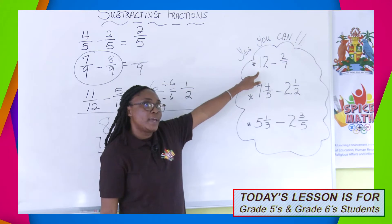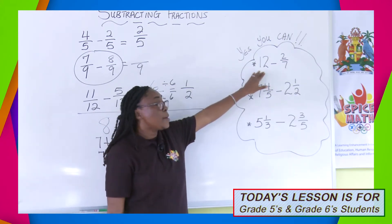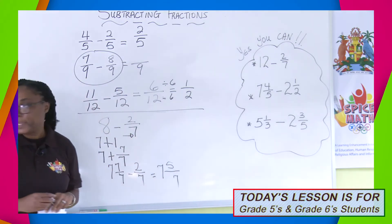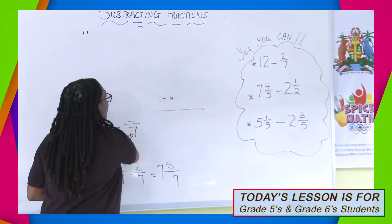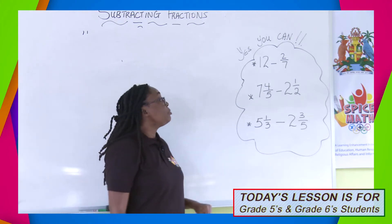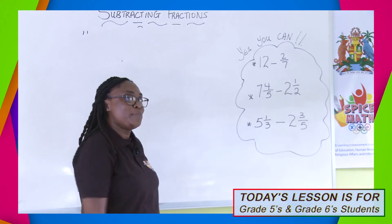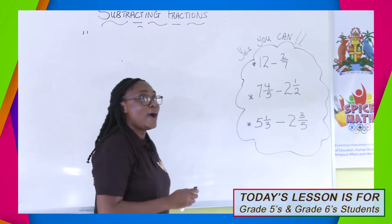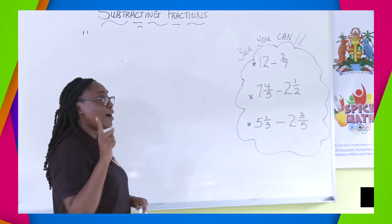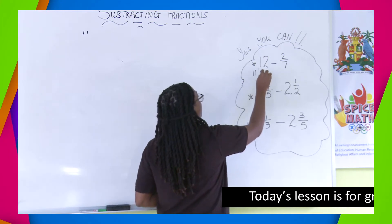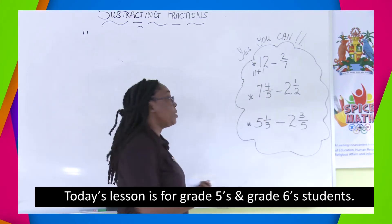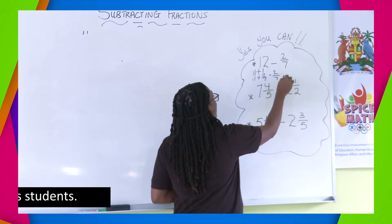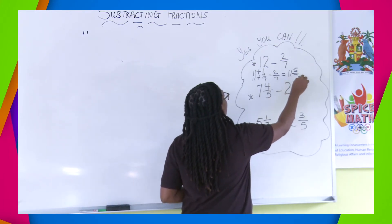Take a look at this question: 12 minus 2 over 7. You are changing the 12 to something plus 1. What plus 1 gives you 12? That's correct — 11 plus 1. How will I get that 1? That 1 will be 7 over 7. And then I'll have an answer of 11 and 5 over 7.